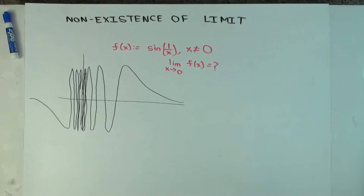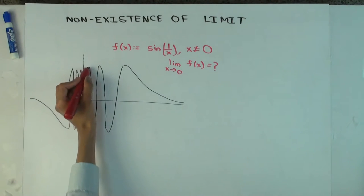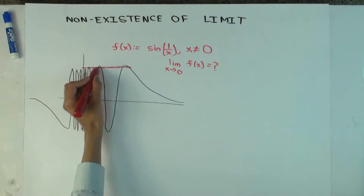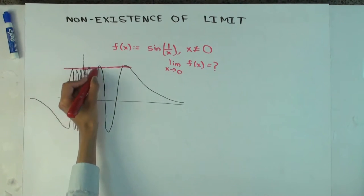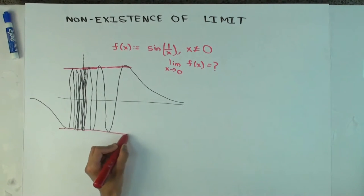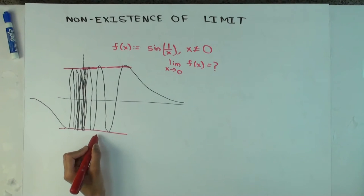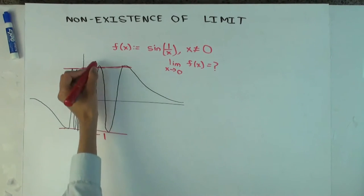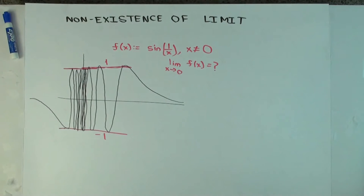What are the upper and lower limits of oscillation? All the peaks and troughs should be the same height. The lower limit is negative 1, the upper limit is 1.